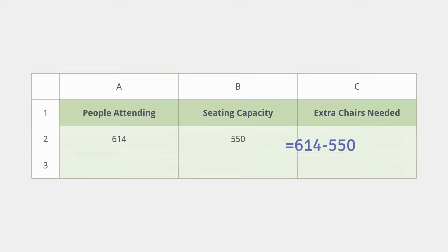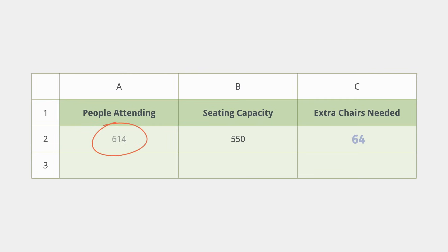Now watch. We're going to move the equal sign to the beginning, and with this one tiny change, it's now in a format that Excel can understand. For bonus points, you could even change the numbers to cell references. See how it works? Let's take a look at the answer. Looks like we're going to need 64 extra folding chairs. And because we used cell references, we can change the number of people attending and the answer will update automatically.